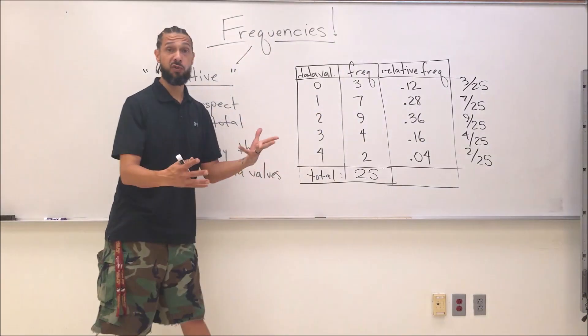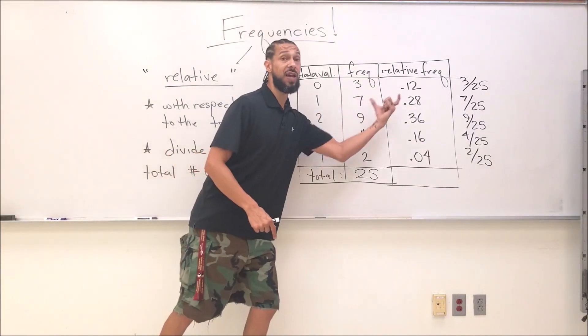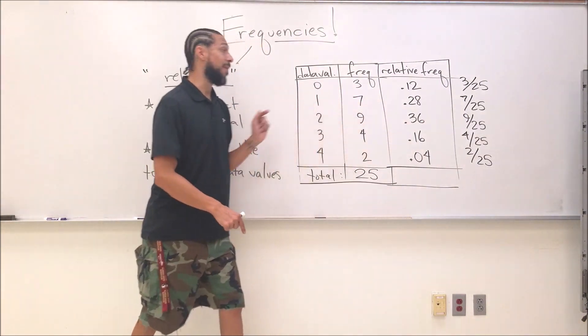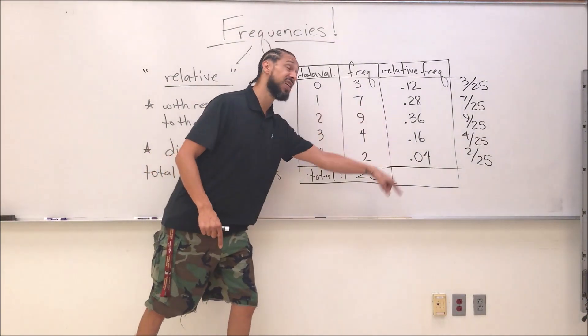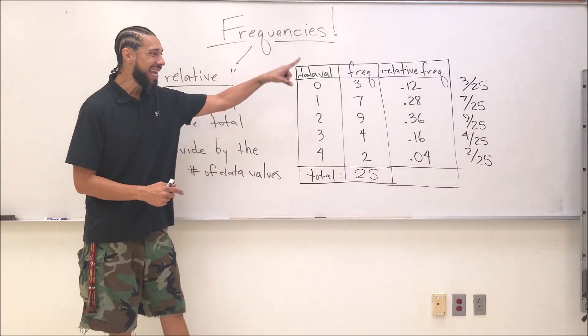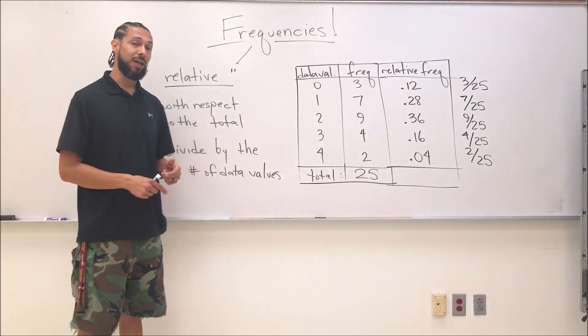Let's change these to decimals now. That's exactly right. This 0.12 means that 12% if I multiply that proportion times 100, it'd be 12%. 12% of my data are zeros. Likewise, 28% of my data are ones, 36% of my data are twos, and so on.